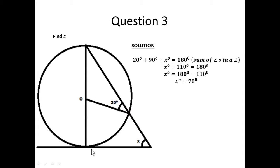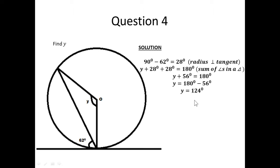So, from the main triangle, this angle is 20 degrees, this angle here is 90 degrees, and adding these plus X will give us 180 degrees — the sum of angles in a triangle. So, 20 plus 90 plus X equals 180 degrees. From here, 20 plus 90 gives us 110, so X equals 70 degrees.